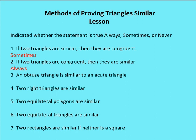An obtuse triangle is similar to an acute triangle — and that answer is never. An obtuse triangle has an obtuse angle, while an acute triangle has all angles less than 90 degrees, so the angle measures of the two triangles are going to be different and therefore they cannot be similar. Number four: two right triangles are similar — that's going to be sometimes. Sometimes we might have a 30-60-90 triangle, and sometimes a 45-45-90 triangle. In those two cases the triangles are not similar because the angles are different.